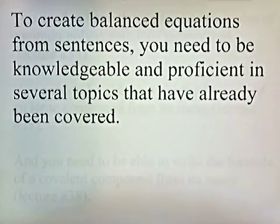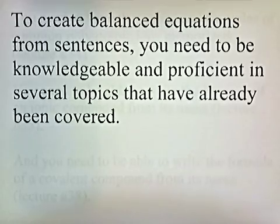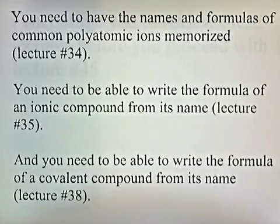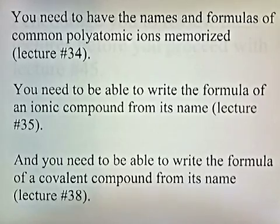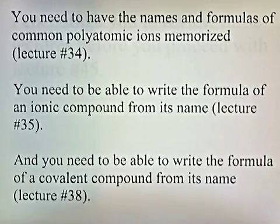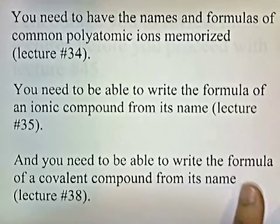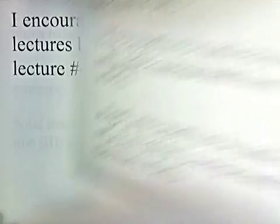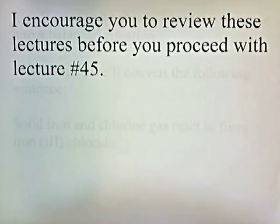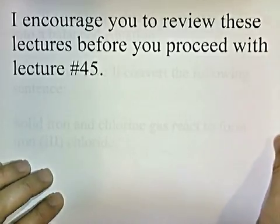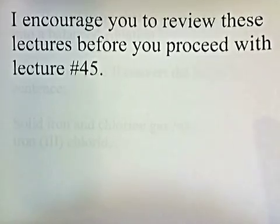To create balanced equations from sentences, you need to be knowledgeable and proficient in several topics already covered. You need to have the names and formulas of common polyatomic ions memorized from Lecture No. 34. You need to be able to write the formula of an ionic compound from its name — that's Lecture No. 35 — and write the formula of a covalent compound from its name, which is Lecture No. 38. Review these lectures before proceeding, as you won't understand these concepts until you have the other concepts thoroughly in your head.